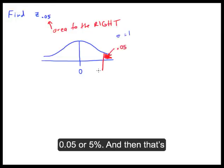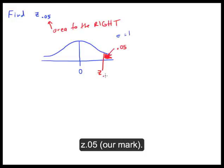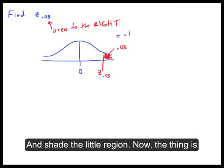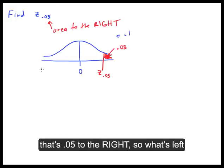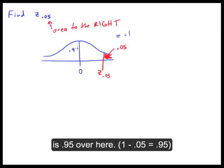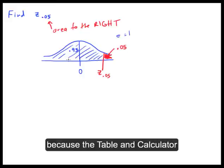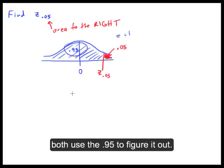So we're going to mark somewhere over here on the right so that the area — this little bit here that I'm shading — is 0.05 or 5%. And that's our Z₀.₀₅. So that's what you want to do first: draw yourself a picture and shade that little region. Now, that's 0.05 to the right, and that means that what's left is 0.95 over here.